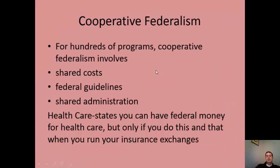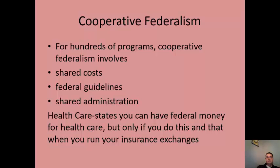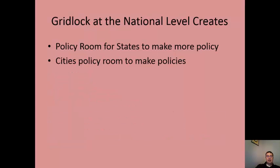For hundreds of programs, cooperative federalism involves shared costs and shared administration. The federal government gives states money to run a program — whether health care or social security — and the states administer it according to federal guidelines. This also allows states and cities to experiment on their own policies when there's gridlock at the national level.